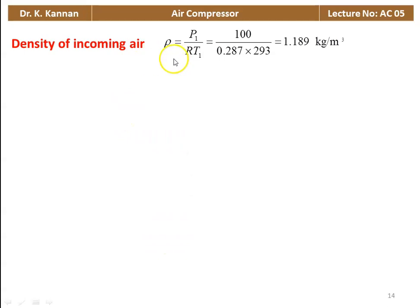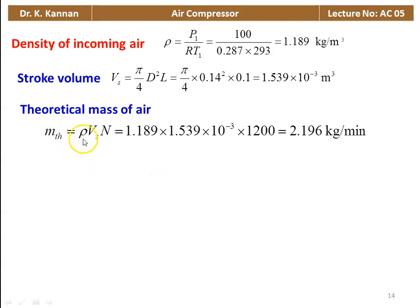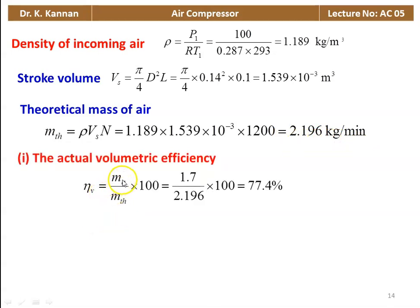Density of incoming air: ρ = P1/(RT1) = 100 / (0.287 × 293) = 1.189 kg/m³. Stroke volume: Vs = (π/4) × 0.14² × 0.1 = 1.539 × 10⁻³ m³. Theoretical mass flow = ρ × Vs × N = 1.189 × 1.539 × 10⁻³ × 1200 = 2.196 kg/min. Actual volumetric efficiency = (1.7 / 2.196) × 100 = 77.4%.